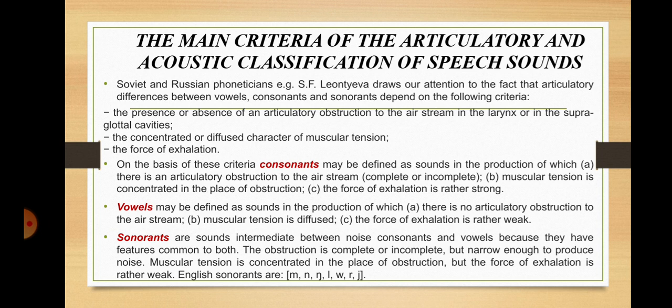Soviet and Russian phoneticians, for instance Leontyeva, draw our attention to the fact that articulatory differences between vowels, consonants, and sonorants depend on the following criteria: the presence or absence of articulatory obstruction to the air stream in the larynx or supraglottal cavities, the concentrated or diffused character of muscular tension, and the force of exhalation. On the basis of these criteria, consonants may be defined as sounds in the production of which there is an articulatory obstruction to the air stream, muscular tension is concentrated in the place of obstruction, and the force of exhalation is rather strong.